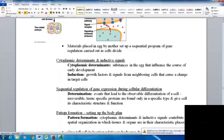Determination involves the events that lead up to the observable differentiation of a cell. These are irreversible. Tissue-specific proteins are found only in a specific type and give the cell its characteristic structure and function.